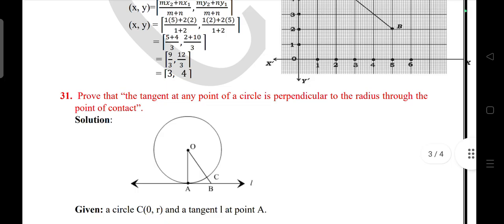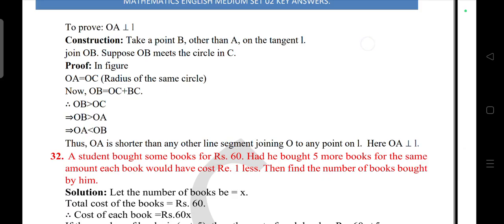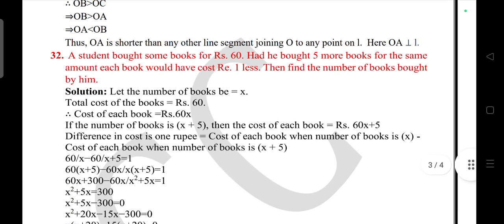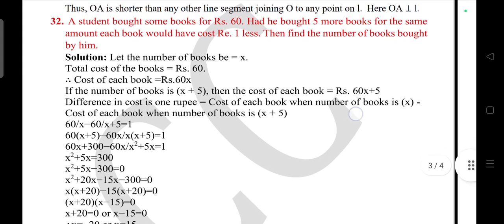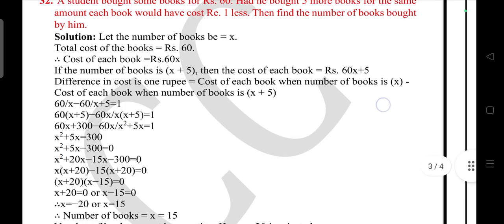Question 34: A student bought some books for rupees 60. Had he bought five more books for the same amount, each book would have cost rupees one less. Then find the number of books bought by him.